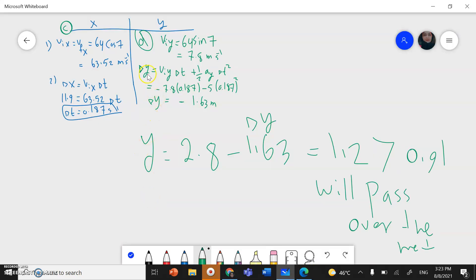We calculate delta y from this equation: V initial y times delta t plus half acceleration y direction delta t square. V initial y is given to us in the question, was 7.8. Since the ball is moving down, it will be negative. Moving down is negative.